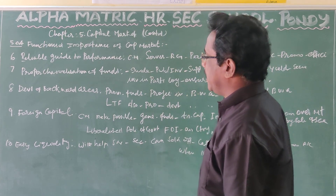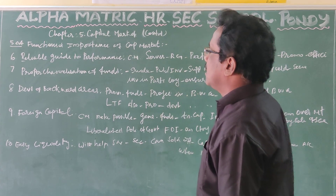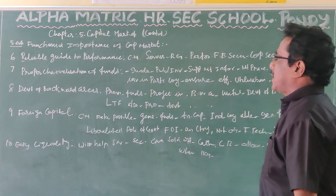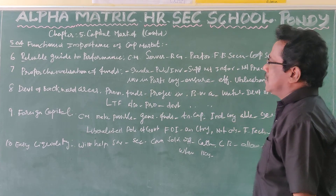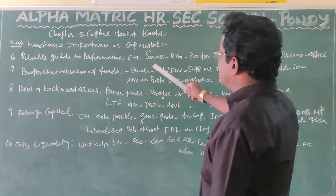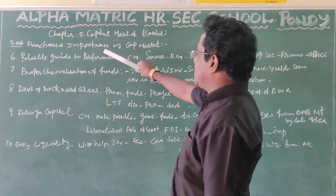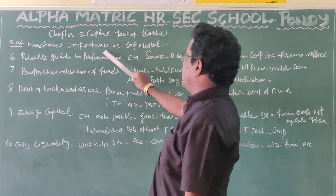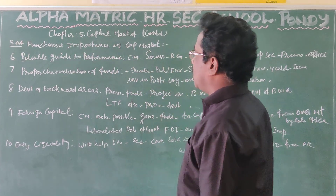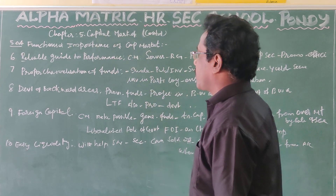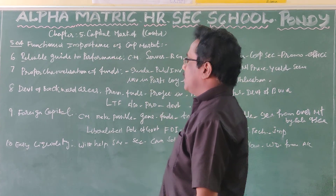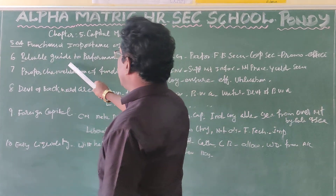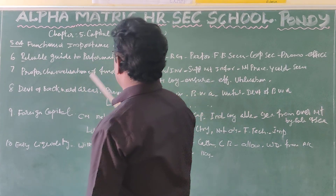So, out of 10 points, we saw 5 points in the previous class. The continuance of the previous class — Functions and Importance of Capital Market. Point number 6: Reliable Guidance to the Performance.